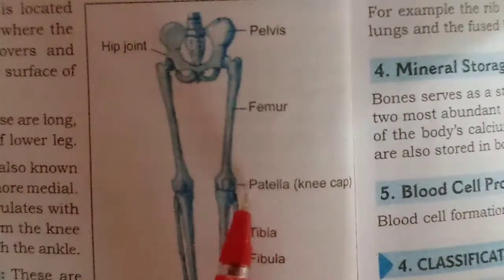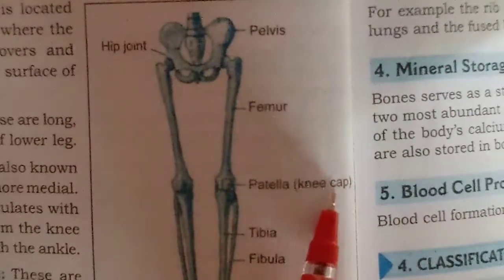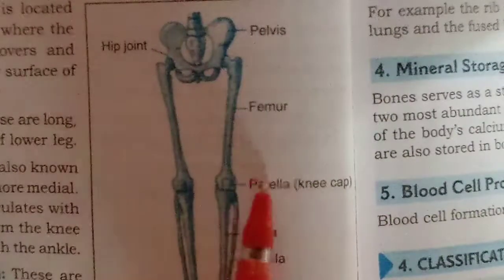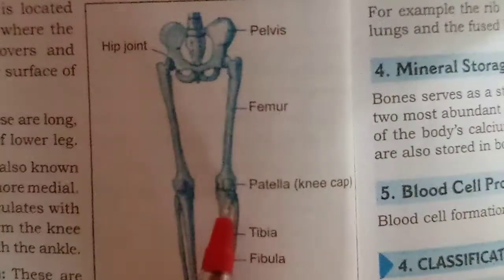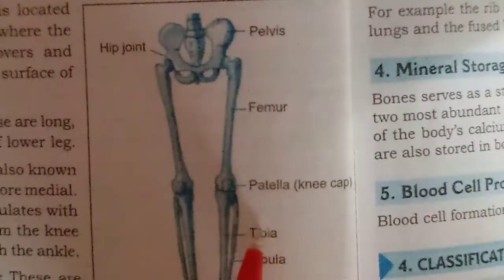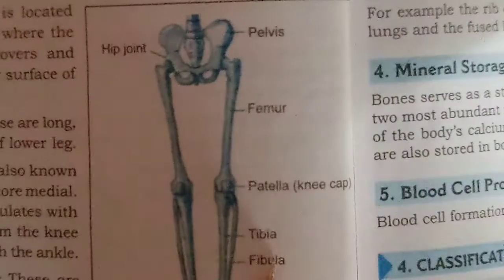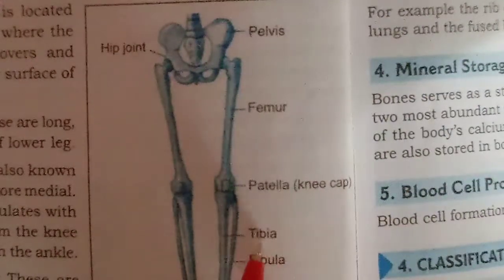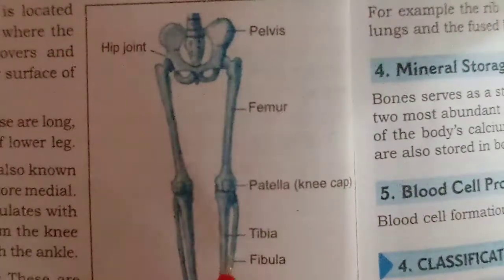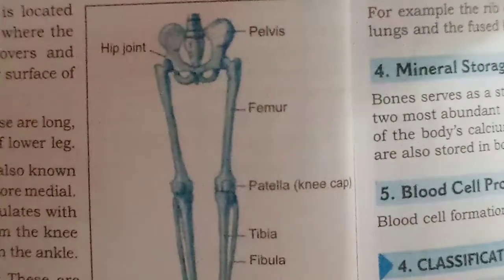The next part is the kneecap, also called the patella. We have two, one for each leg. You can see from the outer side the lower leg bones joined here. Next we have the tibia, also called the shin bone — it is the larger and more medial bone, and you can see both here in the diagram.